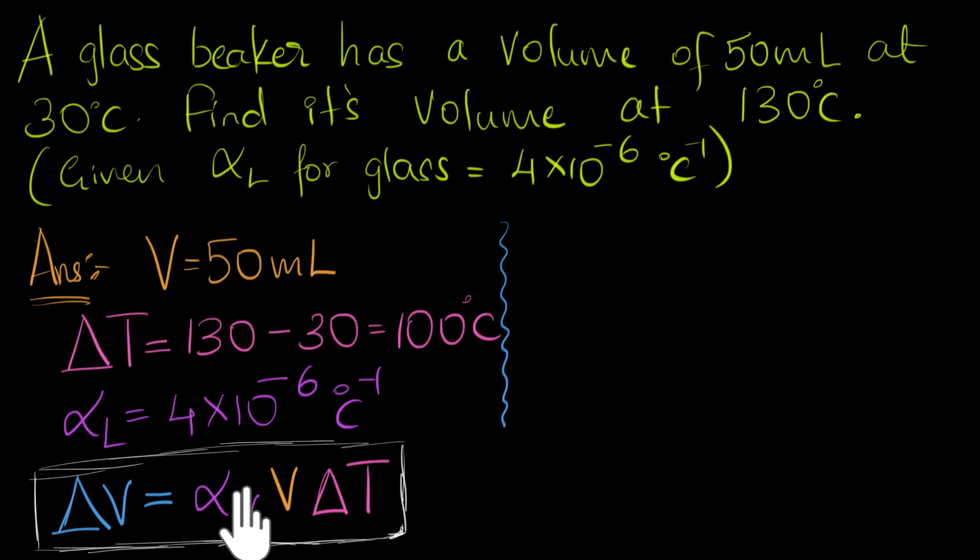So let's substitute and solve. But you can see one problem. We don't know what alpha V is. We need the volume expansion coefficient, but that's not given. Only alpha L is given to us. How do we figure this out? Well, in a previous video, we actually derived that alpha V is just 3 times alpha L. And if you're interested in seeing this derivation, you can again go back and watch that video.